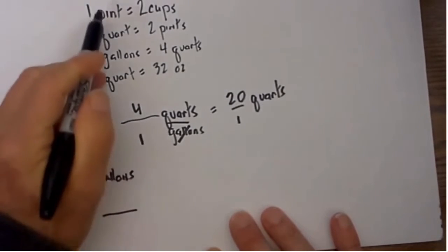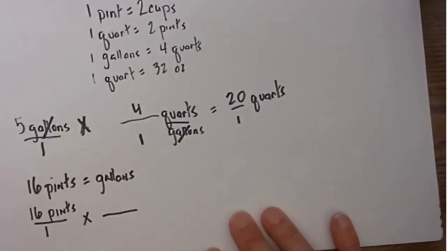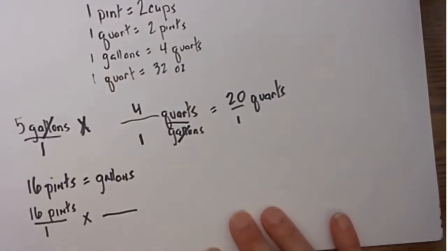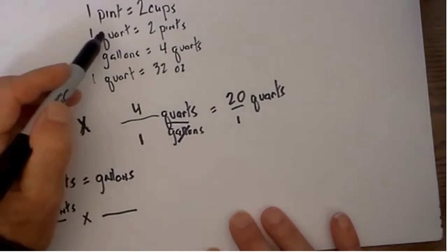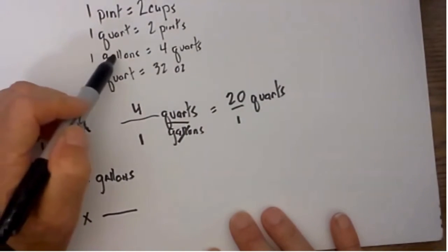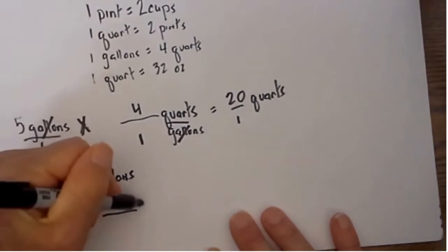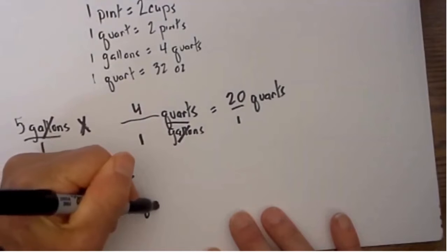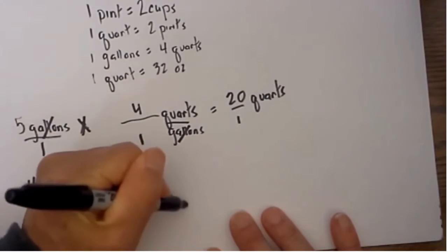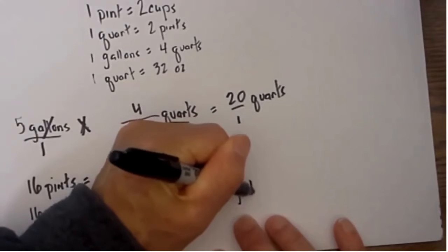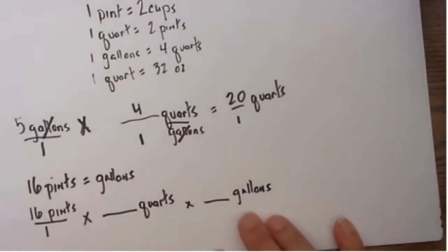In this particular instance, I do not know how many pints are in a gallon, but I do know that 1 quart is equal to 2 pints and that 4 quarts is equal to a gallon. So I will first convert to quarts and then I will convert from there to gallons. So let's see how this works.